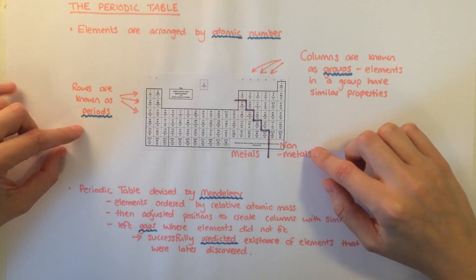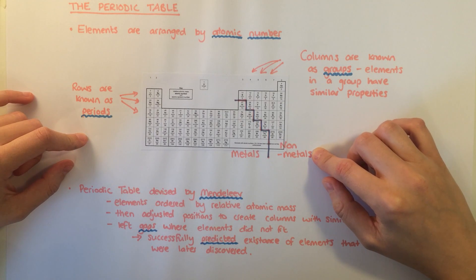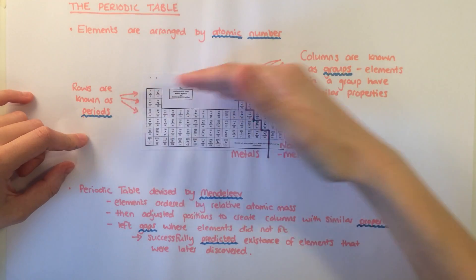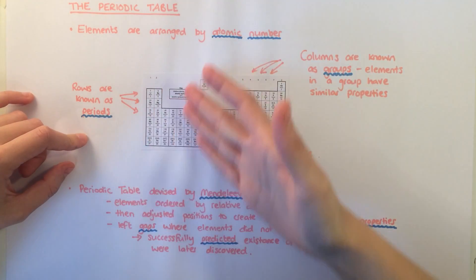The periodic table is a chart showing all the elements that exist. The elements are arranged in order of atomic number and are positioned in specific rows. These rows are called periods. Each element then falls into a particular column or group.